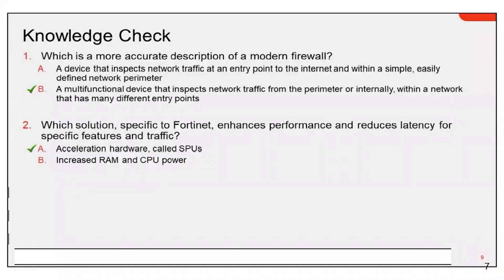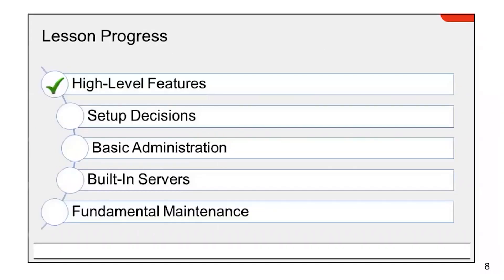Knowledge check: The most accurate description of a modern firewall is a multifunctional device that inspects network traffic from the perimeter or internally within a network that has many different entry points. The traditional single-perimeter setup is outdated. The solution that enhances performance and reduces latency for specific features is hardware acceleration — the SPU. Know CP, SP, and NP for your exam.